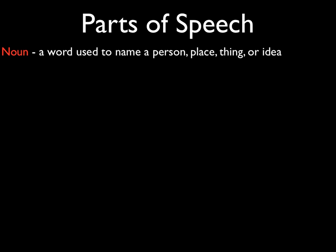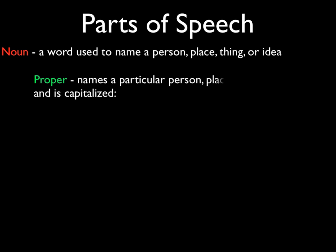A noun is the most common type of word that we use and it is a word used to name a person, place, thing, or idea. And of course there are several kinds of nouns. There is a proper noun which names a particular place, thing, or person, and it is always capitalized.